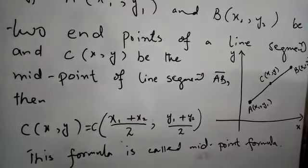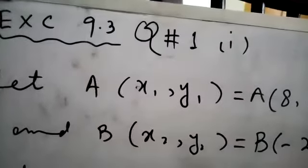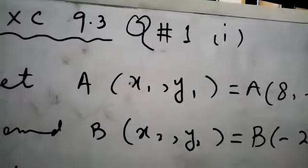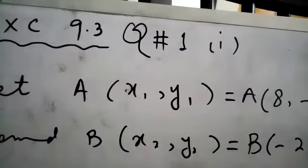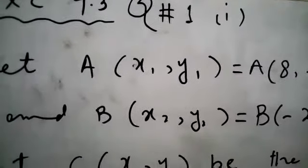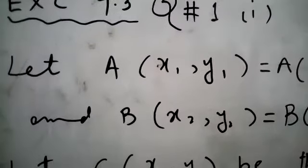We will start exercise 9.3 and question number 1 is find the coordinates of the midpoint of the segment given the points. Endpoints of line segments are given. Let us consider the first endpoint part first is represented by A(x1, y1).